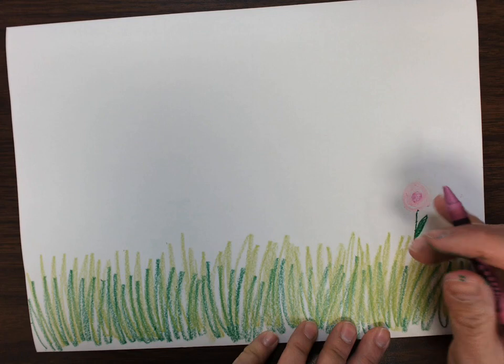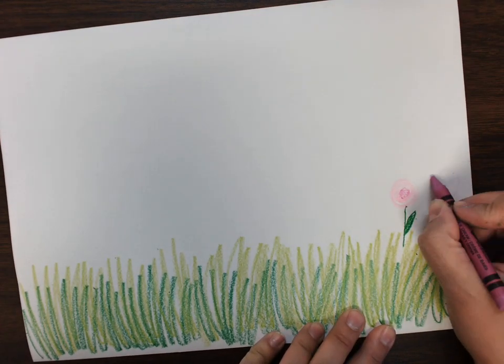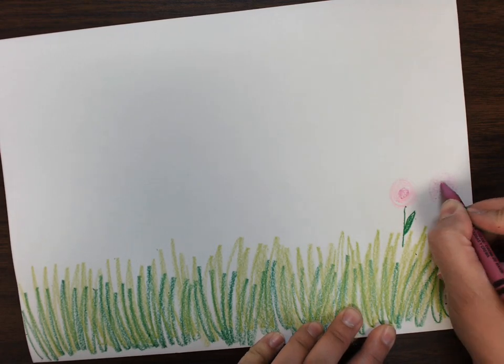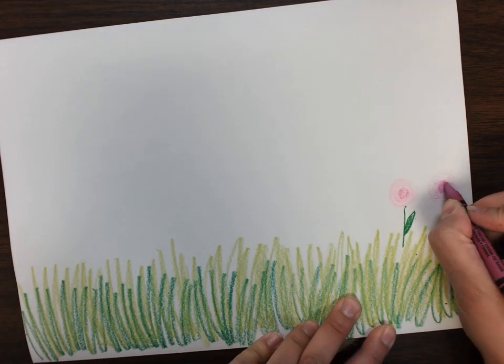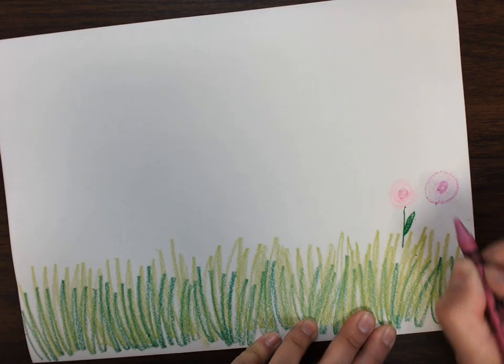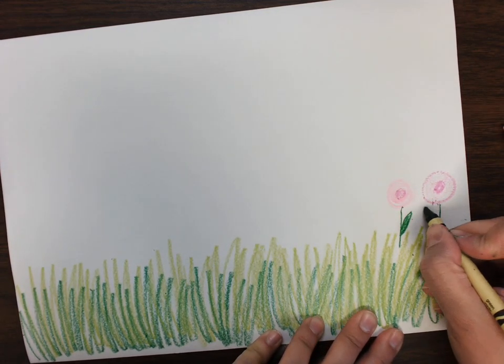Another cool way that you can create value is with the same crayon. Try this. Don't press down very hard to create a light value, and then push down really hard to create a dark value. That's always kind of fun too. You can see it a little better. And a stem and a leaf.